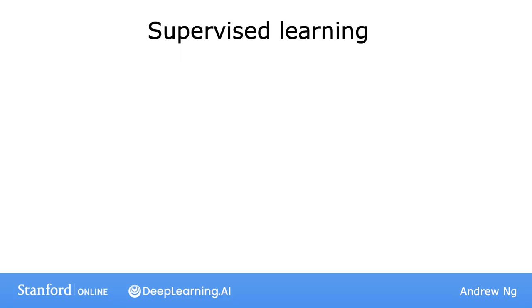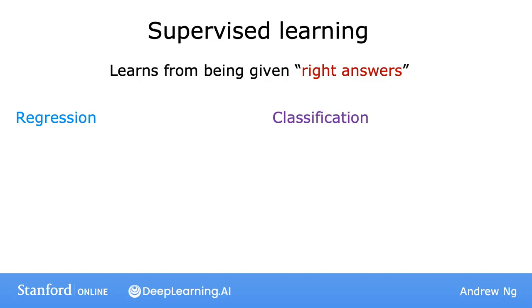So to recap, supervised learning maps input x to output y, where the learning algorithm learns from the, quote, right answers. The two major types of supervised learning are regression and classification.